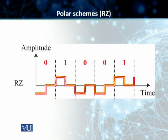There is another issue with this return to zero scheme: because it uses three levels of voltages, it is more complex to create and interpret at the receiving end. Because of these two problems, this is mostly replaced by Manchester and differential Manchester, which we will discuss next.